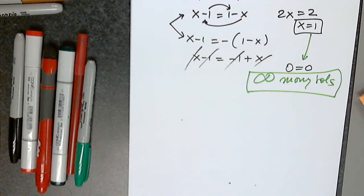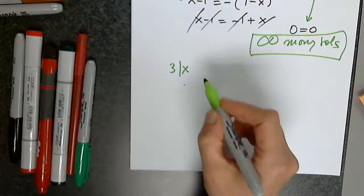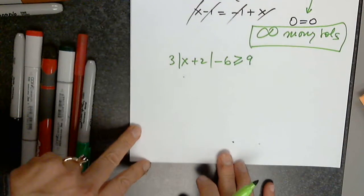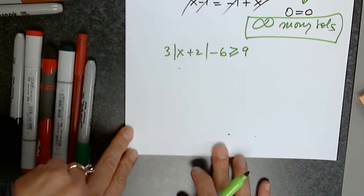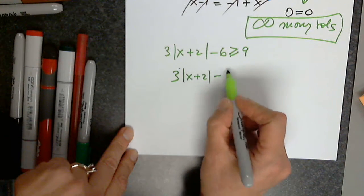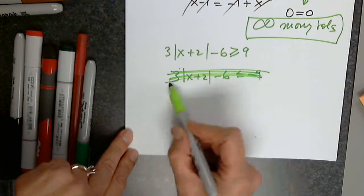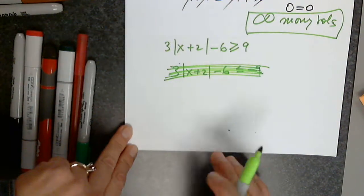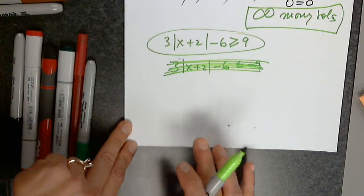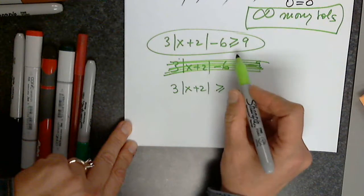2b. So: 3 times the absolute value of x plus 2, minus 6, greater than or equal to 9. I've seen so many different things in that one. I even saw 3 times the absolute value of x plus 2, minus 6, less than or equal to negative 9. Obviously, I have to clean it up first — I cannot decide what to do before I fully clean it up. I have to add 6: so 3 times the absolute value of x plus 2, greater than or equal to 15. I must divide by 3.